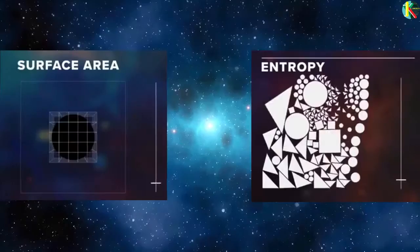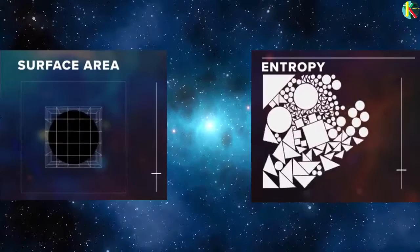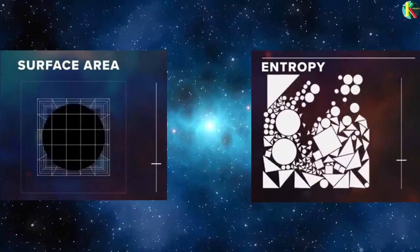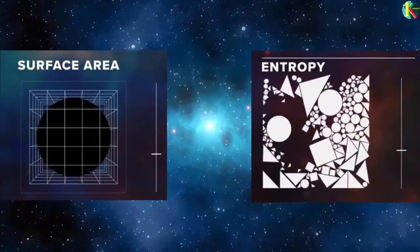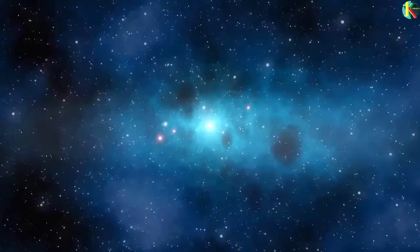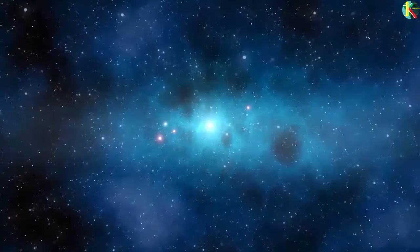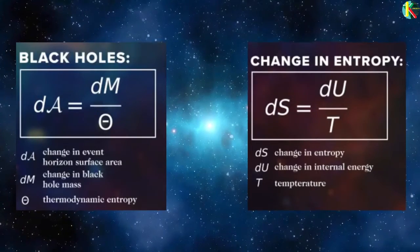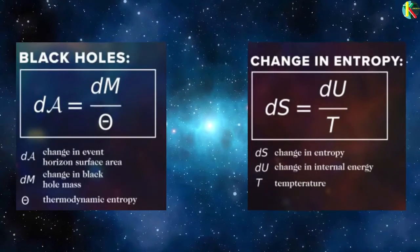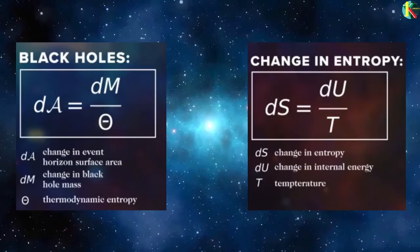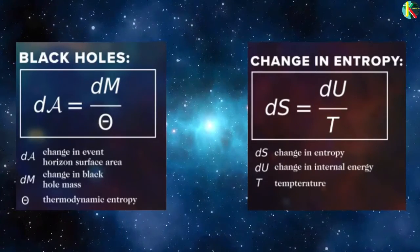Bekenstein saw a close correspondence between the always increasing event horizon surface area and the always increasing nature of entropy. He also realized that the equation relating the change in black hole surface area to the change in its mass closely resembles the original definition of thermodynamic entropy.